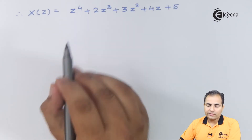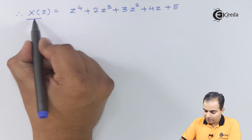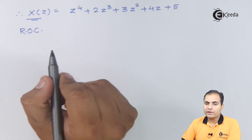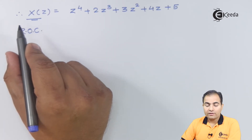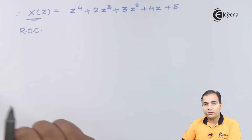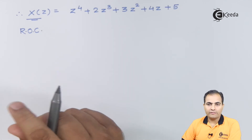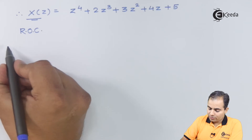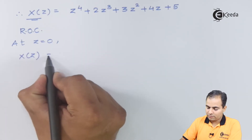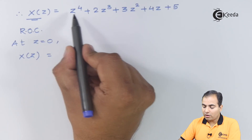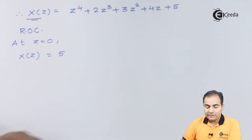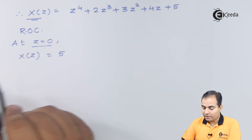The Z-transform of the given sequence is now determined. Next we find the ROC — the region of convergence — which is the region where this function gives a finite result. Using a shortcut, we substitute only the first and last limits of z. Substituting z equals zero: all z terms become zero, leaving only five, which is a finite result. So at z equals zero we get a finite value.